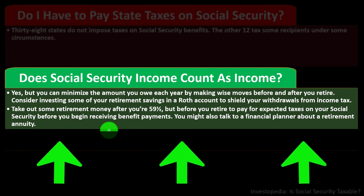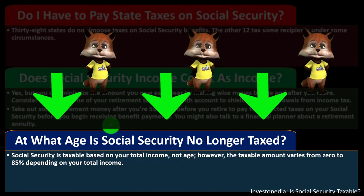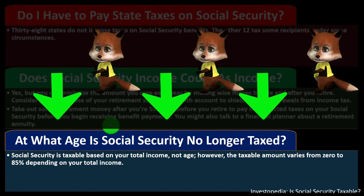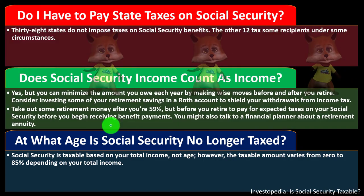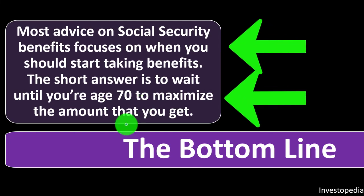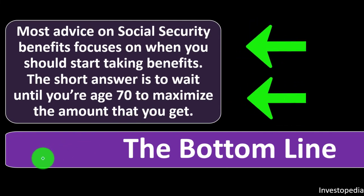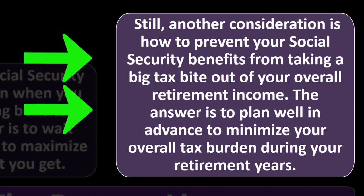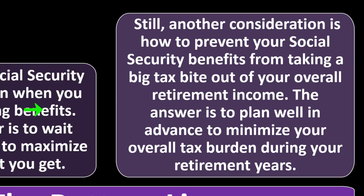You might also talk to a financial planner about a retirement annuity. At what age is Social Security no longer taxed? Social Security is taxable based on your total income, not your age — taxable income varies from zero to 85 percent depending on total income. Most advice on Social Security benefits focuses on when to start taking them — the short answer is to wait until age 70 to maximize your payment. Still another consideration is how to prevent Social Security benefits from taking a big tax bite out of your overall retirement income. The answer is to plan well in advance to minimize your overall tax burden during retirement.